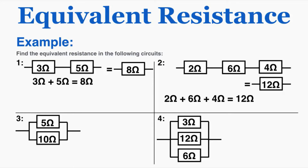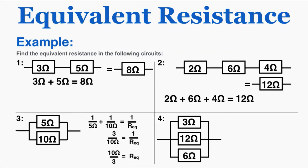For circuit number three, the resistors are in parallel, so we use the parallel resistance rule and plug them in. The first step after plugging in is finding a common denominator, which is 10 ohms. Combining gives 3/10 ohms equals 1 over the equivalent resistance. A very common mistake is stopping here or just adding the denominators together — it is not 2/15 or 1/15. Taking the inverse of both sides gives an equivalent resistance of 10/3 ohms, which equals 3.3 ohms.